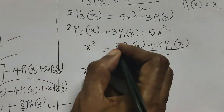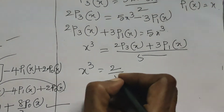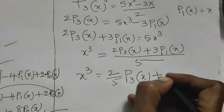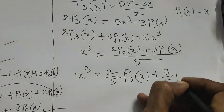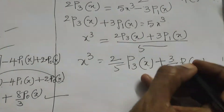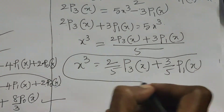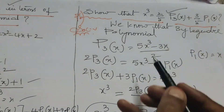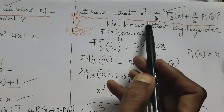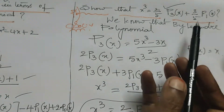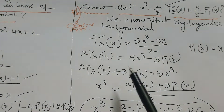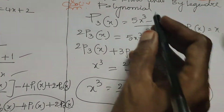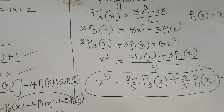Dividing both sides by 5: x³ = (2/5)·P3(x) + (3/5)·P1(x). Hence, the given function is proved in terms of Legendre polynomials using P3(x). Thank you.